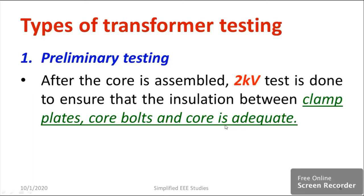Whether a sufficient level of insulation has been provided or not — so if any changes are observed, that means the quality of the insulation is not proper. Suppose after applying 2 kV, if you find any abnormality, you will come to know that the insulation level provided in the transformer is not sufficient.